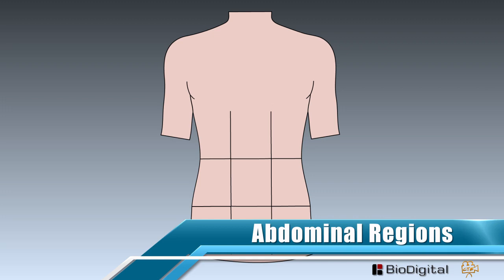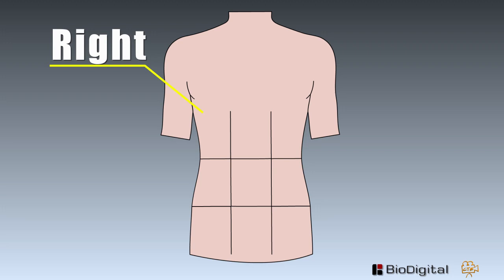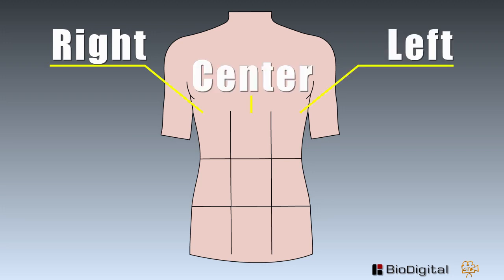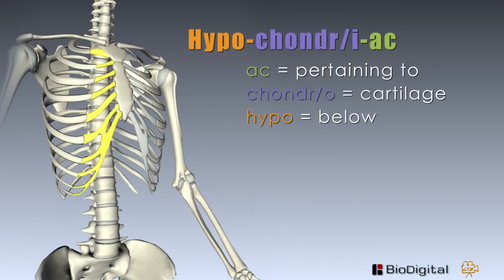The abdominal cavity is further divided into abdominal regions. There are a total of nine, which are divided into three sections: right, center, and left. Starting on the right, we have the right hypochondriac, which is located on the abdominal region below the ribs.